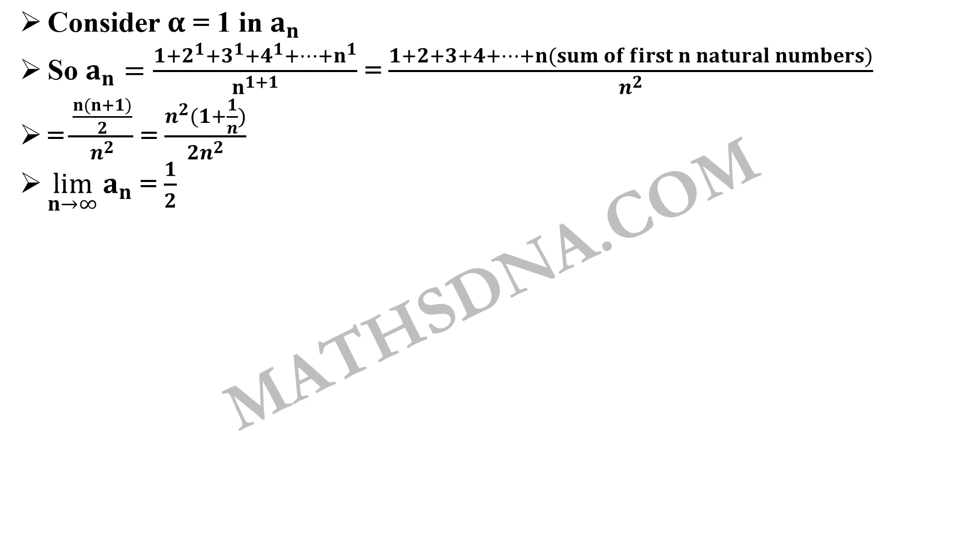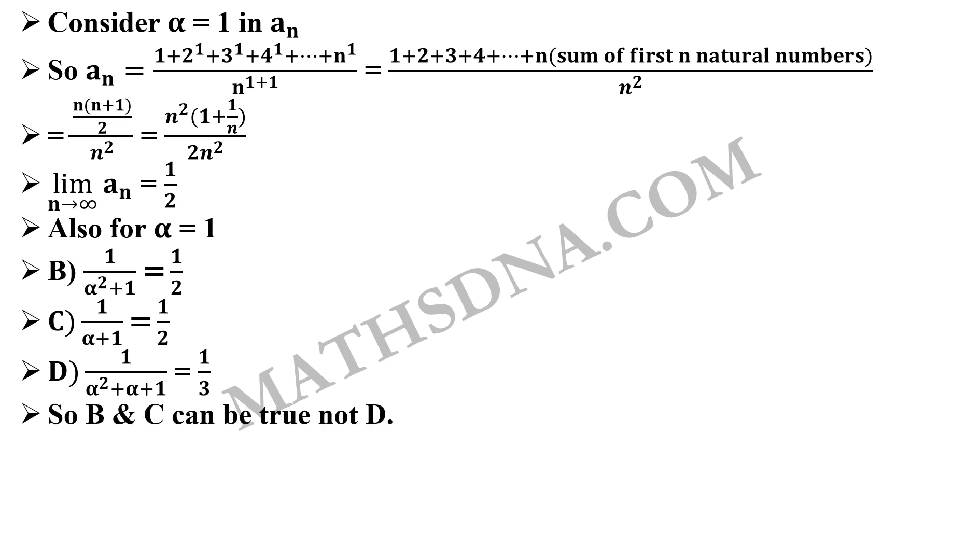Now put the value of alpha equals to 1 in all the three options that is b, c, and d. So option b is 1 upon alpha square plus 1 that will be equals to 1 by 2. 1 upon alpha plus 1 that will also be equals to 1 by 2 and d, 1 upon alpha square plus alpha plus 1, that will be equals to 1 by 3. So option d cannot be correct because in the question they are strictly saying that alpha can be any value greater than or equals to 0. So if alpha equals to 1, d cannot be correct thus d is not the answer. So only two options remain b and c. Now this is also for only alpha equals to 1, we need to check one more value that is alpha equals to 2 to see whether b and c both are still correct or any of them gets eliminated.